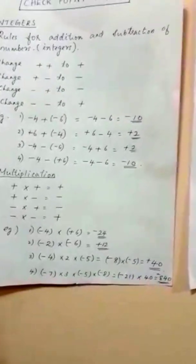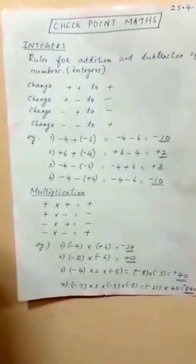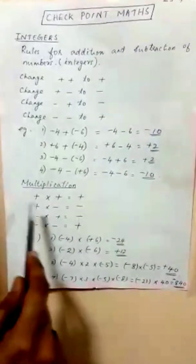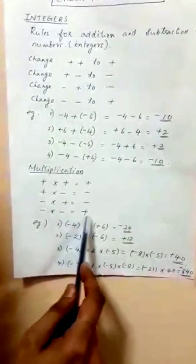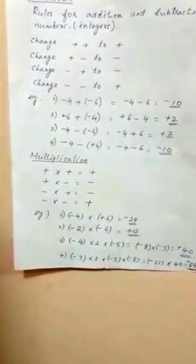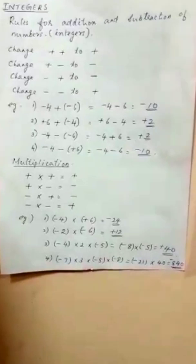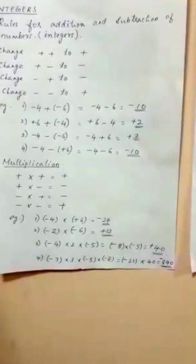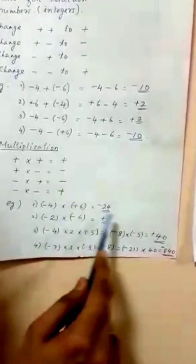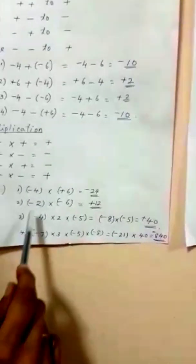Now for multiplication. The rules are: plus times plus is plus; minus times minus is plus; plus times minus is minus; minus times plus is minus. Same sign gives plus, opposite sign gives minus. Example: minus 4 into plus 6 — 4 times 6 is 24, and minus times plus is minus. Answer is minus 24.